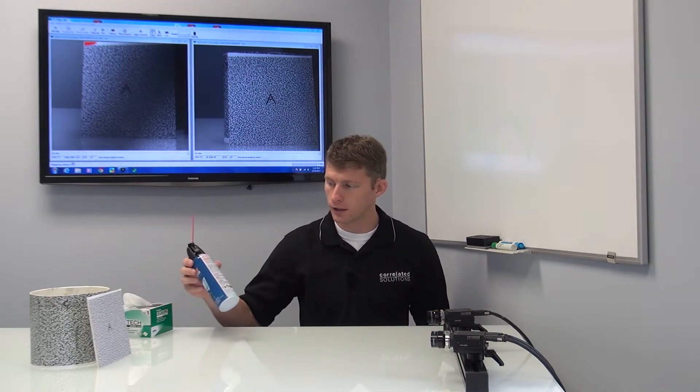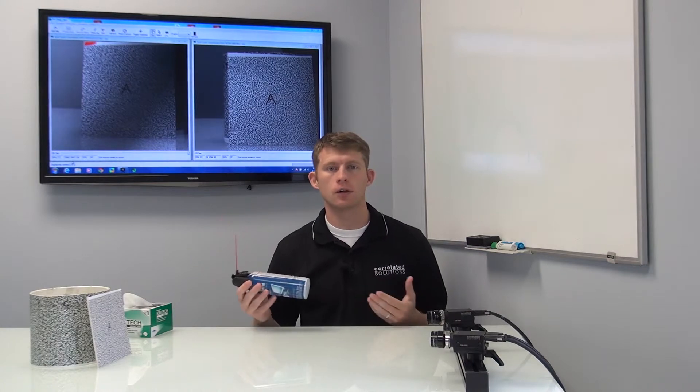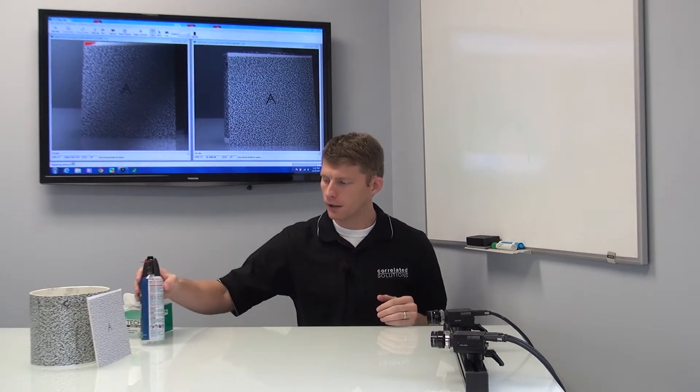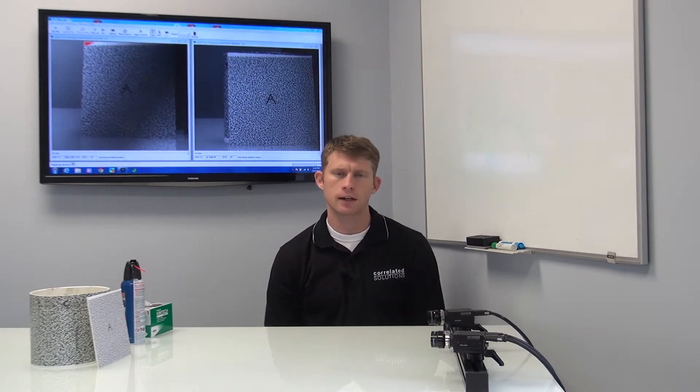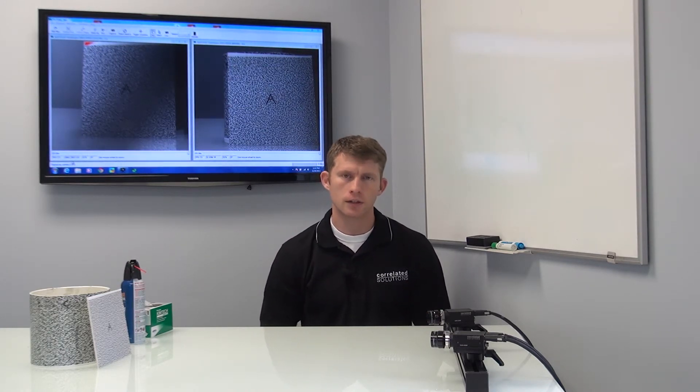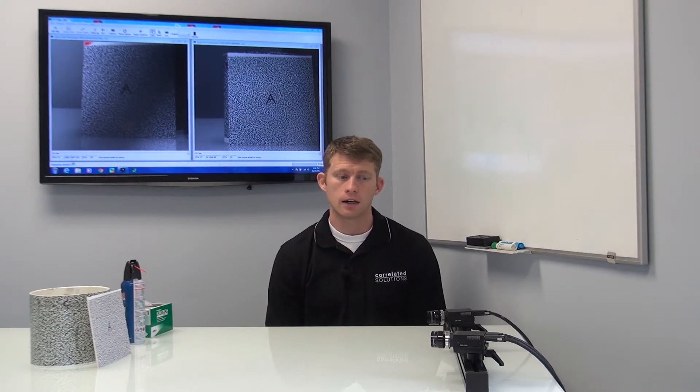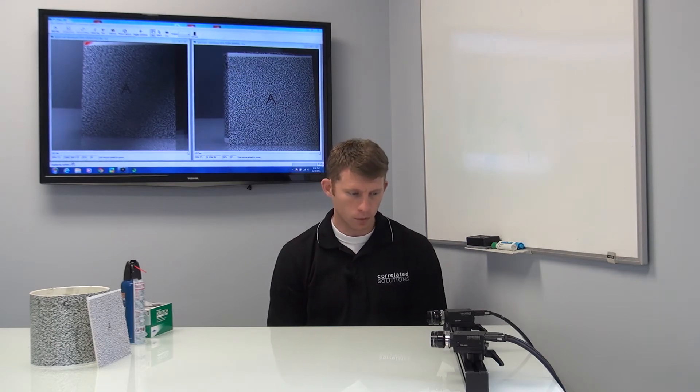If it's dust on the camera's filter, you can blow it off with a can of air. But if there's a smudge or fingerprint, you'll probably want to send the camera back to us here at Correlated Solutions and we can clean that off for you. We can also clean off any dust or fingerprint that might be on the camera sensor itself. We'd much prefer that than having you do it yourself.